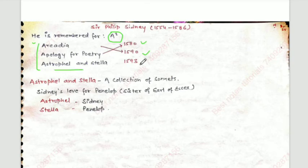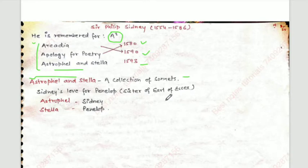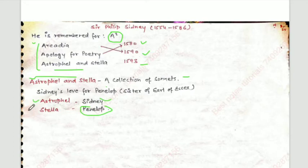A short note on Astrophil and Stella: it was a collection of sonnets representing Sydney's love for Penelope, sister of the Earl of Essex. Stella represents Penelope, and Astrophil represents Sydney himself. So if asked who Astrophil represents, the answer is Sydney, and Stella represents Penelope.